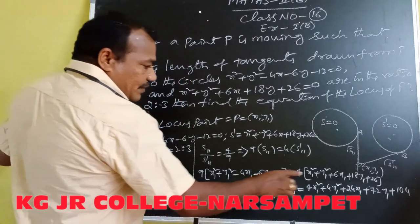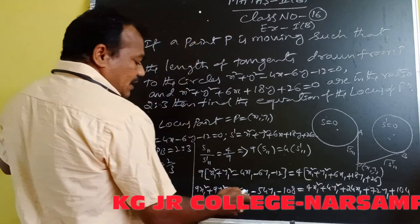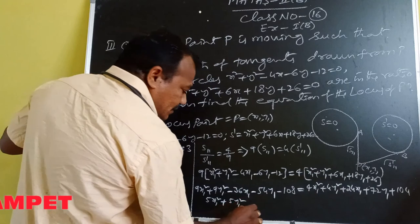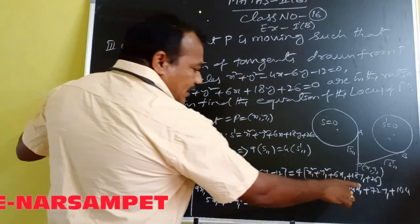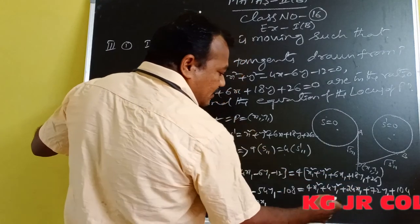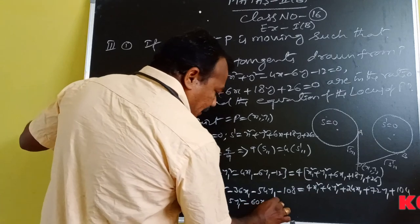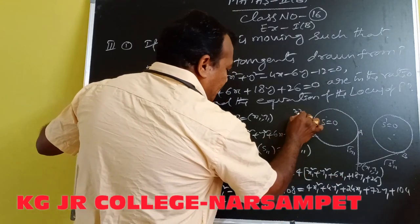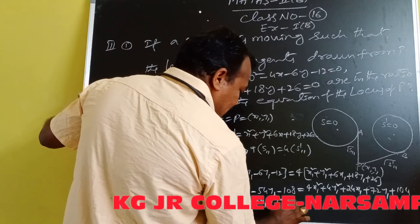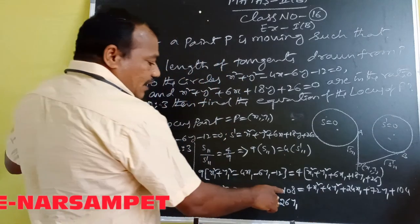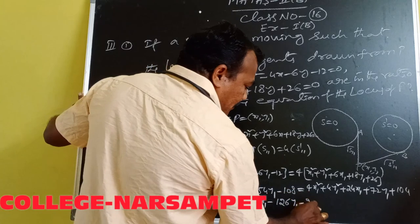Continuing to collect terms on the LHS: for x1, we have -36x1 - 24x1 = -60x1. For y1, we have -54y1 - 72y1 = -126y1. For the constants: -108 - 104 = -212. So combining all terms gives 5x1² + 5y1² - 60x1 - 126y1 - 212 = 0.